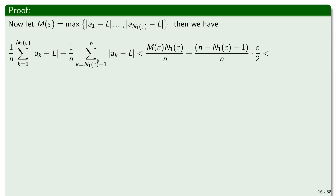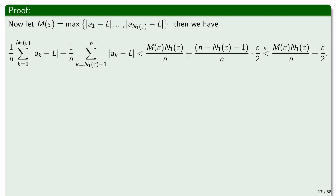For the second part, the number of elements is n minus n_1(epsilon) minus 1, and each element is smaller than epsilon/2, multiplied by 1/n. So we've managed to bound this expression above by those two parts. Now, importantly, the numerator in the second part is smaller than n, and we divide by n, so the quotient is strictly smaller than 1. As a result, that sum is strictly smaller than epsilon/2. So the first part remains bounded, and the second part is smaller than epsilon/2.